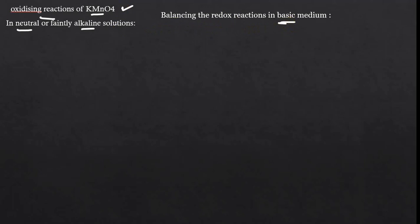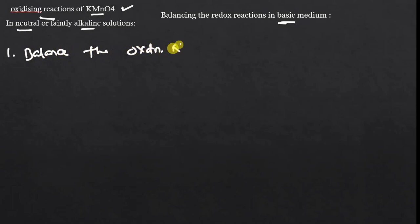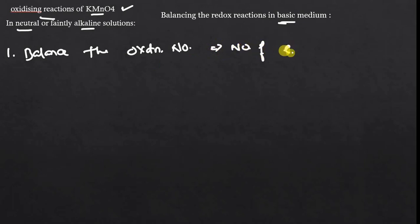Before entering into the topic, I will give you a few points to balance ionic equations in base medium. Point number one: first, balance the oxidation number. Balancing the oxidation number means we have to maintain the number of electrons equal in both half-cells — that is, the number of electrons must be equal on both sides.